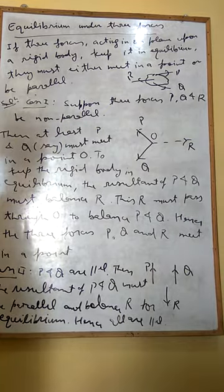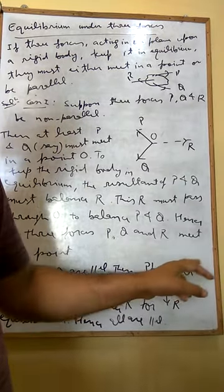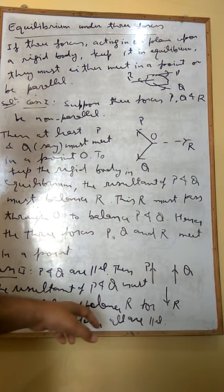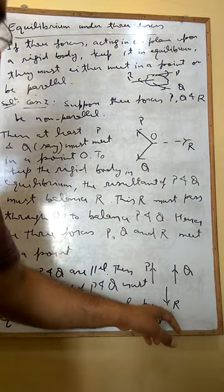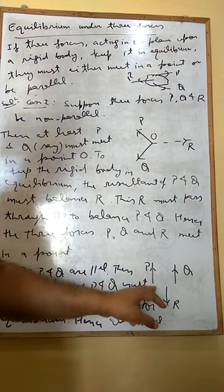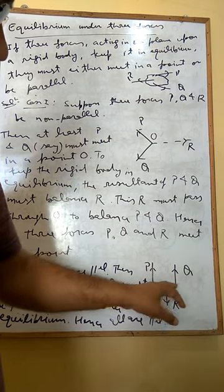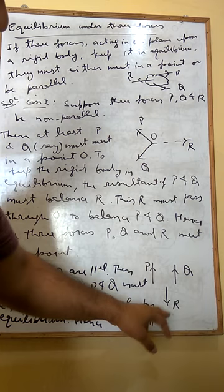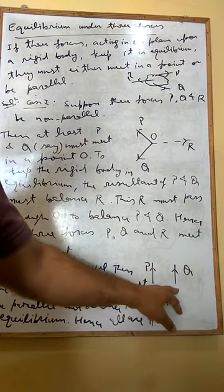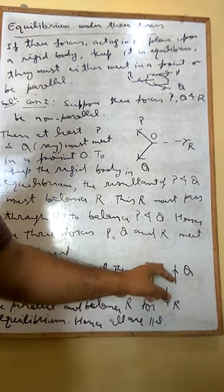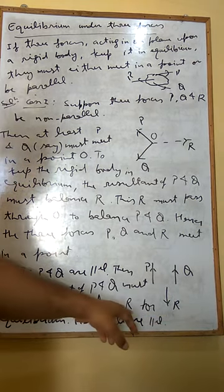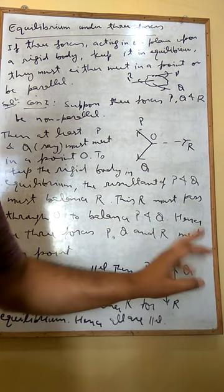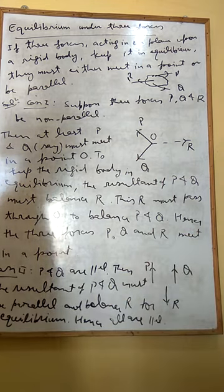Now, second case. Suppose two forces P and Q are parallel, so their resultant will also be parallel to P and Q. Since we have a third force R and the body is in equilibrium, the resultant of P and Q must balance the third force R. It means the third force R will be opposite to the resultant of P and Q in direction and of the same magnitude. Hence R will also be parallel to the resultant of P and Q, and therefore parallel to both P and Q. Hence all three forces are parallel.